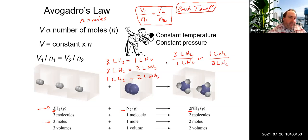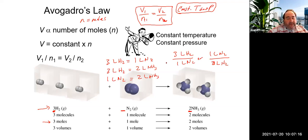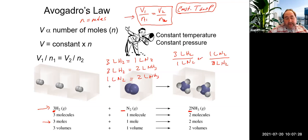If we're given volume information about a reaction involving gases, we can use this volume-to-volume relationship, which is rooted in Avogadro's law — that moles and volume are essentially the same idea; they increase equally. This is in addition to plugging directly into Avogadro's Law formula.